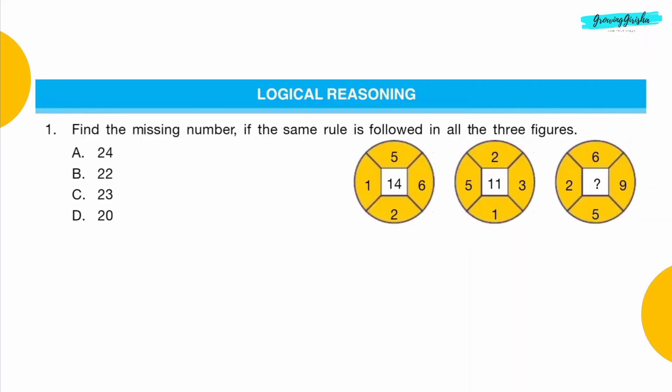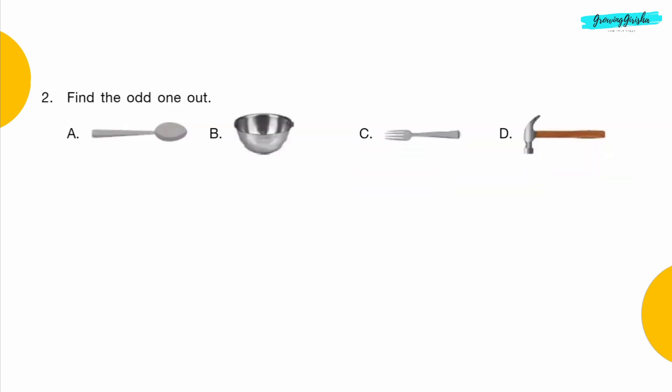Logical Reasoning Question 1: Find the missing number if the same rule is followed in all the three figures. Option B: 22.